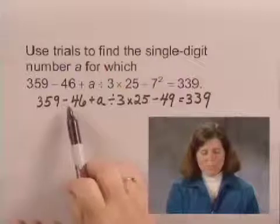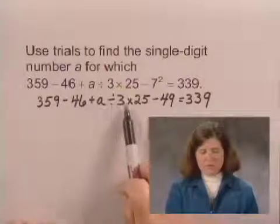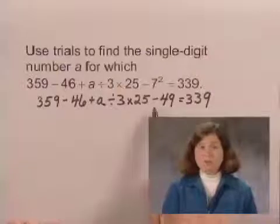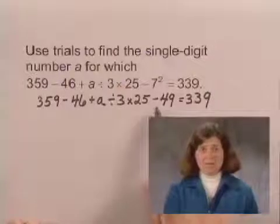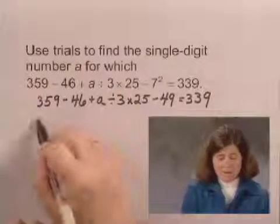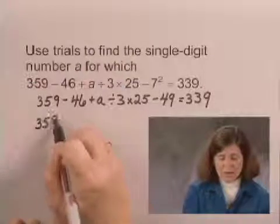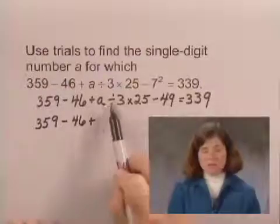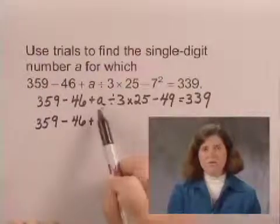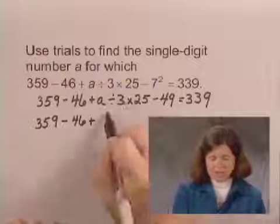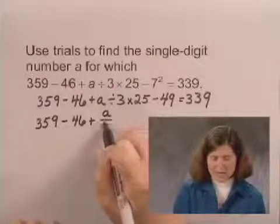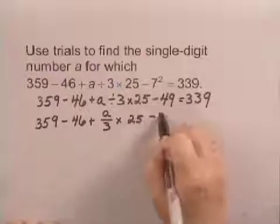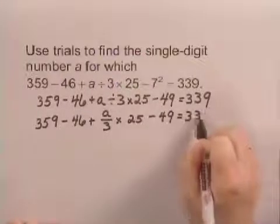Now as I look through, I have operations of subtraction, addition, division, multiplication, subtraction. I want to do all multiplications and divisions in order as they appear from left to right. Again, I'll copy 359 minus 46 plus, here's my first operation, A divided by 3. So I'll write that as A divided by 3 times 25 minus 49 equals 339.